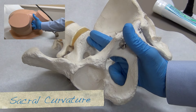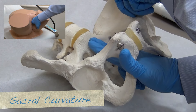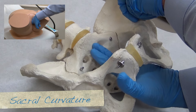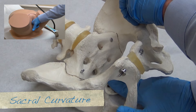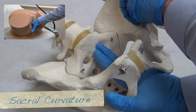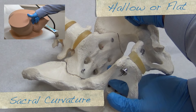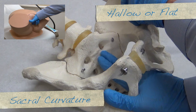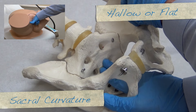Next, the hand is pronated 90 degrees and the curvature of the sacrum is palpated by moving the fingers inferiorly. The anterior surface of the sacrum is described as being hollow or flat.